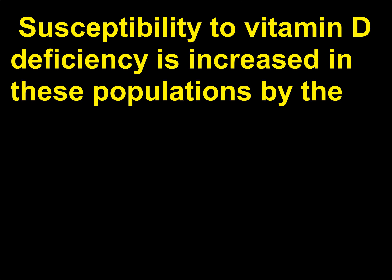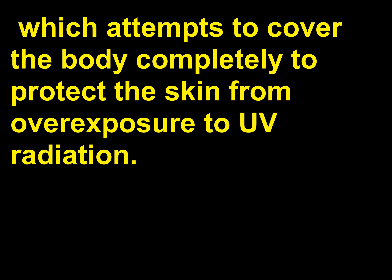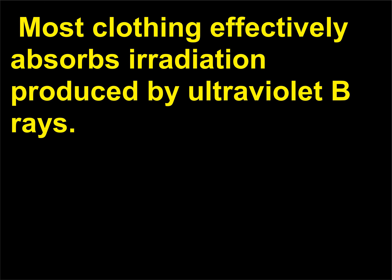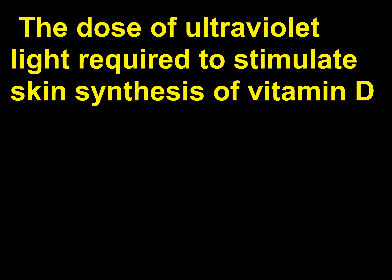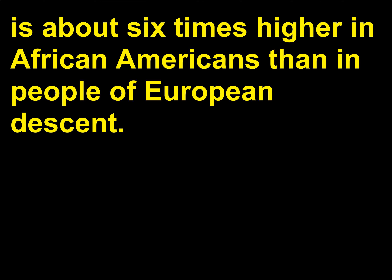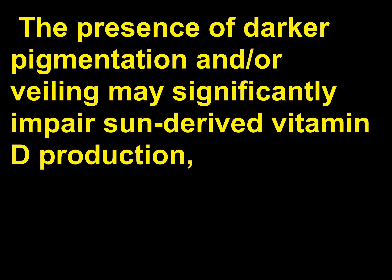Susceptibility to vitamin D deficiency is increased in these populations by the traditional clothing of many cultural groups native to low latitudes, which attempts to cover the body completely to protect the skin from overexposure to UV radiation. Most clothing effectively absorbs irradiation produced by ultraviolet B-rays. The dose of ultraviolet light required to stimulate skin synthesis of vitamin D is about six times higher in African Americans than in people of European descent. The presence of darker pigmentation and/or veiling may significantly impair sun-derived vitamin D production.